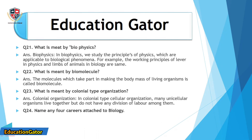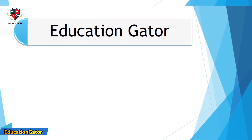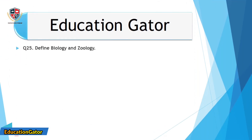Question number 23: What is meant by colonial type organization? Ans. Colonial organization: in colonial type cellular organization, many unicellular organisms live together but do not have any division of labor among them.